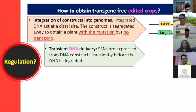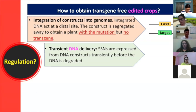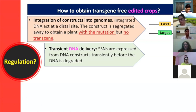Another approach is transient DNA delivery: instead of integrating the DNA construct into the genome, you express it only temporarily — just long enough for the Cas9 to make a cut and cause the mutation. Before integration occurs, the DNA construct is degraded. Your work is done in that short window, after which the Cas9 construct is gone. So you don't have any problem with integration.